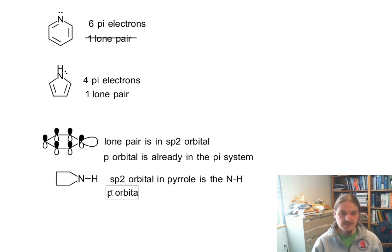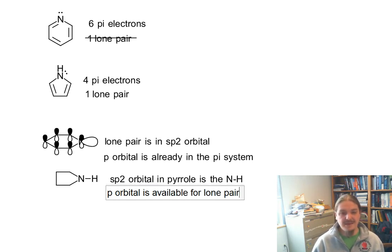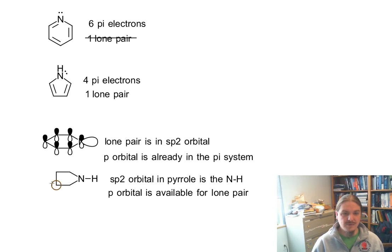And so that means that the p-orbital is available for the lone pair. And that's really the difference here between pyridine and pyrrole, is that in pyrrole, the p-orbital is available for the lone pair. Where in pyridine, it's not.